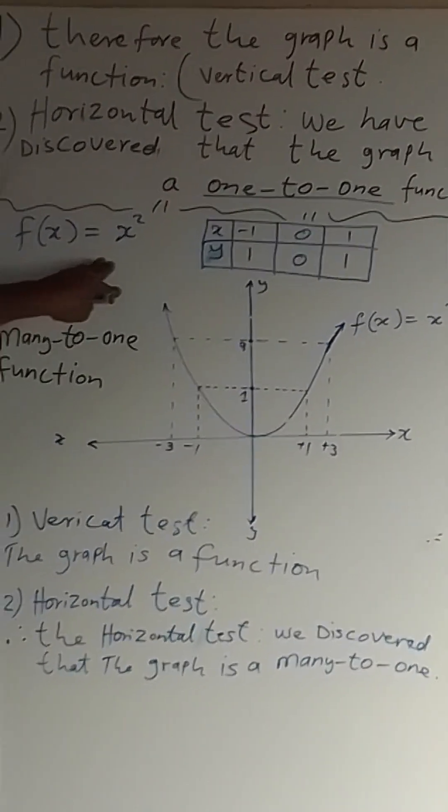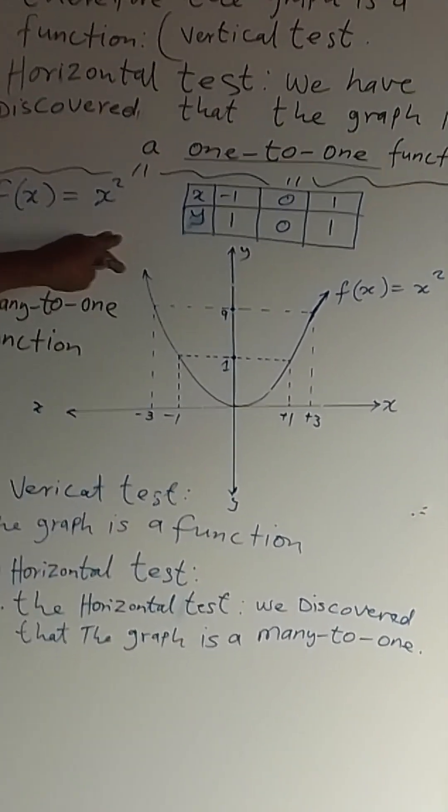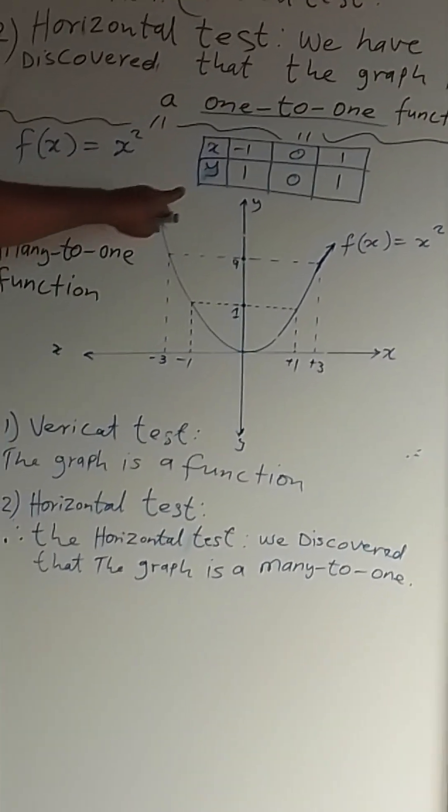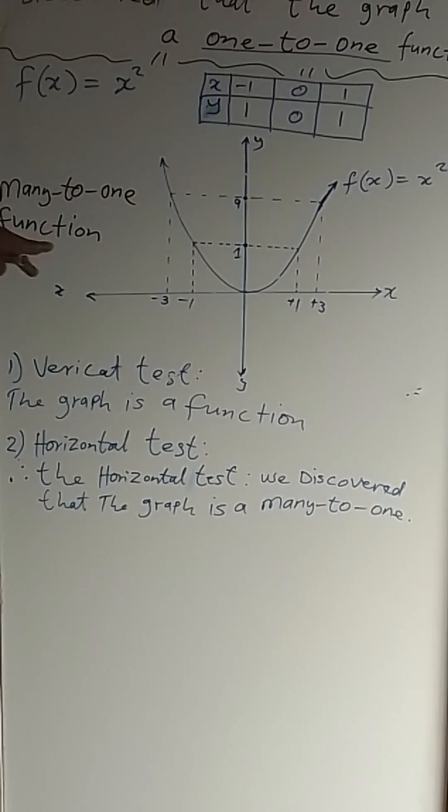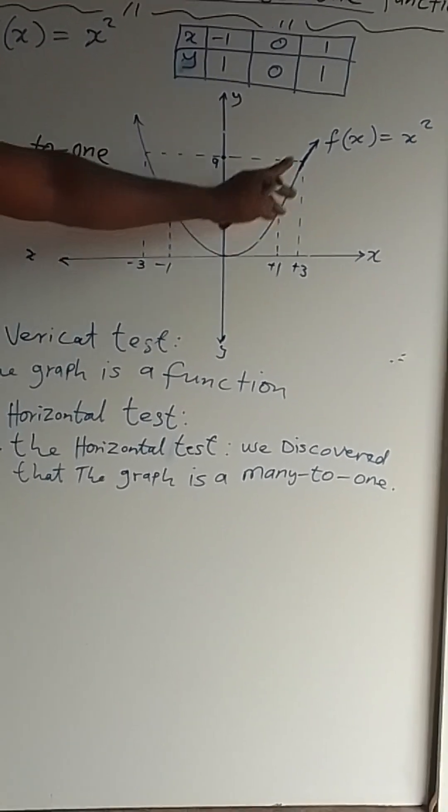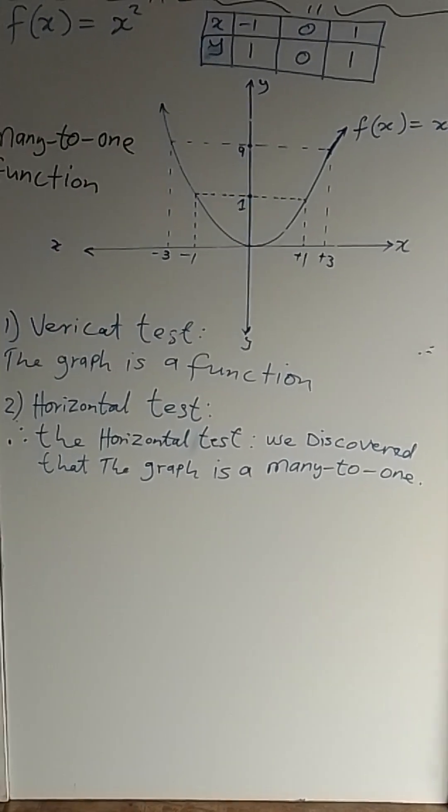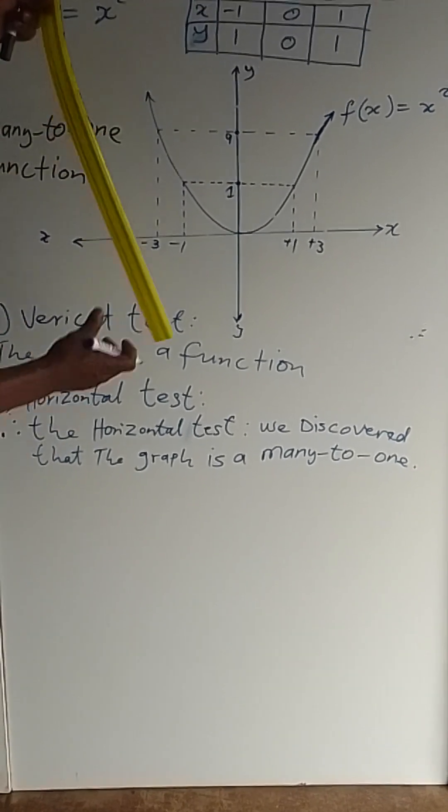Now we're just summarizing this. Then we find that we are using a parabola here. This parabola is going to be sketched by a table. We use our table, and if we draw our graph when we use a vertical test, we found that it is a function.